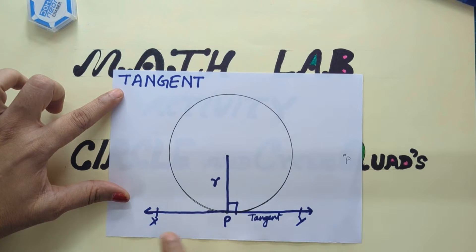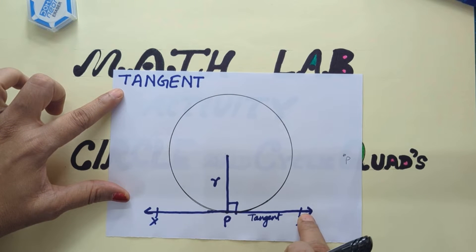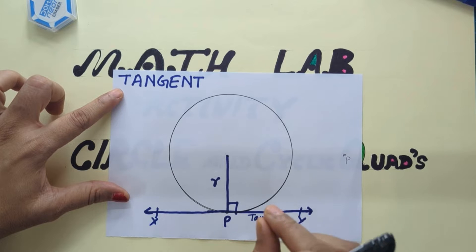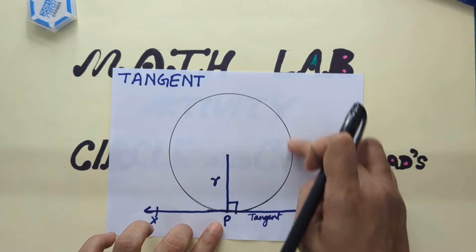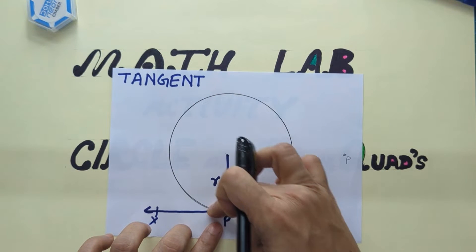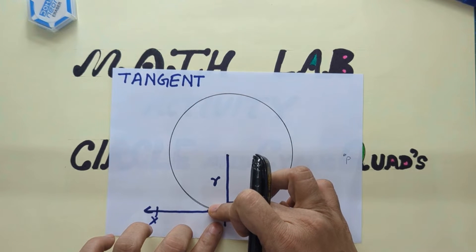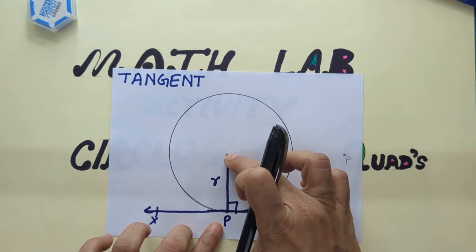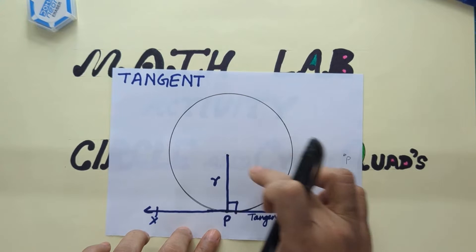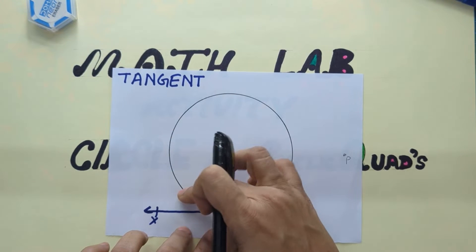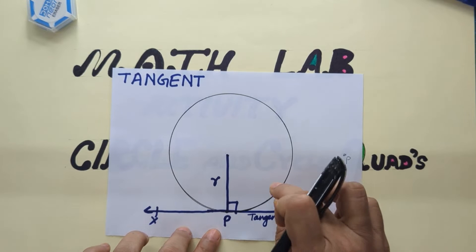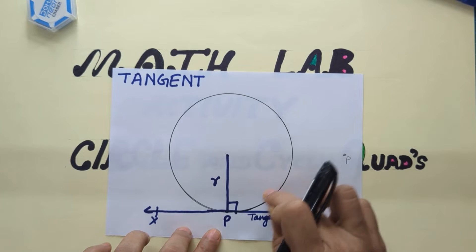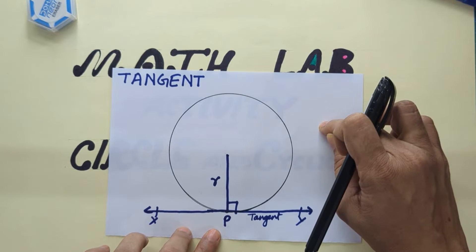First, what is a tangent? A tangent is a straight line that touches the circle in exactly one point. A circle is a locus of an infinite number of points which are at equal distance from a fixed point called the center of the circle. At those infinite number of points, infinite tangents can be drawn, so at a point on the circle, exactly one tangent can be drawn.